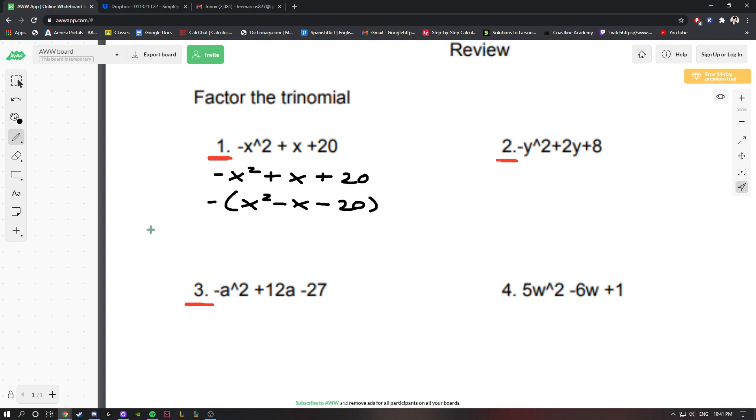We're just going to leave this negative on the outside for now. When we factor this, we're going to get (x - 5)(x + 4). You could distribute the negative into one of your factors and get -(x - 4)(x - 5).